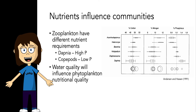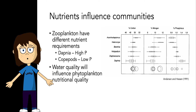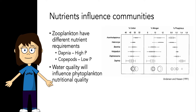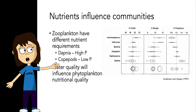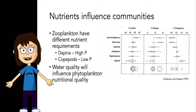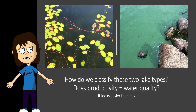While we haven't yet learned about organisms higher up in the food chain, the abundance of nutrients in a lake impacts the community composition of phytoplankton, which in turn can influence the community composition of zooplankton. Water quality influences phytoplankton nutritional quality. For example, Daphnia have a high phosphorus requirement compared to other zooplankton, and so they want to eat phytoplankton that also have a lot of phosphorus. In this way, nutrient availability and nutrient stoichiometry can have interesting trophic interactions up the food chain.